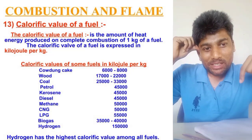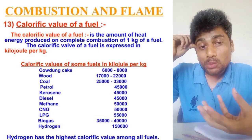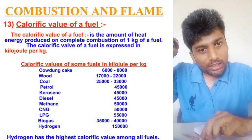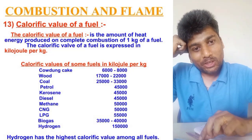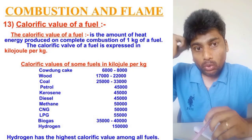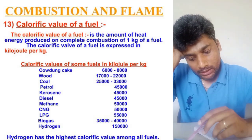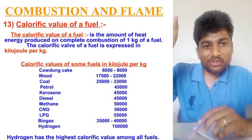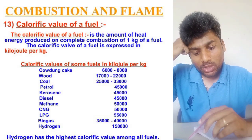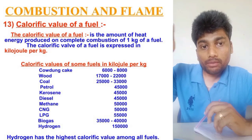The calorific values: wood produces about 20,000 kilojoules per kg; coal, 25,000–33,000; petrol and kerosene and diesel around 45,000; CNG and LPG about 50,000; biogas 35,000–40,000; and hydrogen about 1,50,000 kilojoules per kg. However, hydrogen is not easily available.